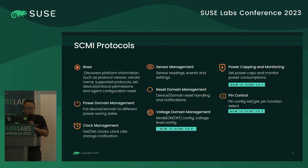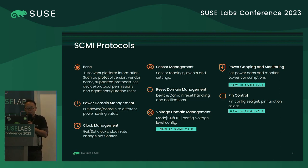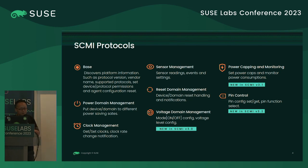Let's talk about the protocols that SCMI can support. The base protocol is used to discover platform information such as product versions, vendor names, or even the permissions of supported protocols. Power domain management handles power management not just for the CPU but also other devices inside the system — a power domain can consist of multiple components.